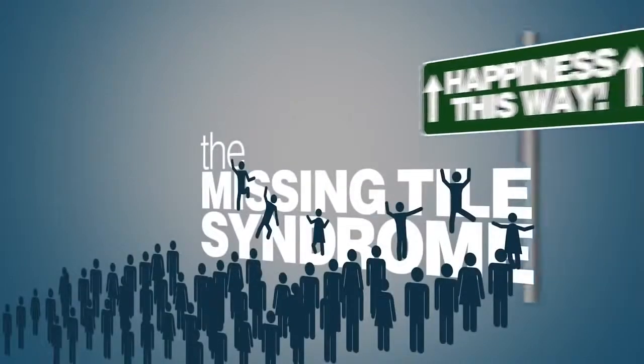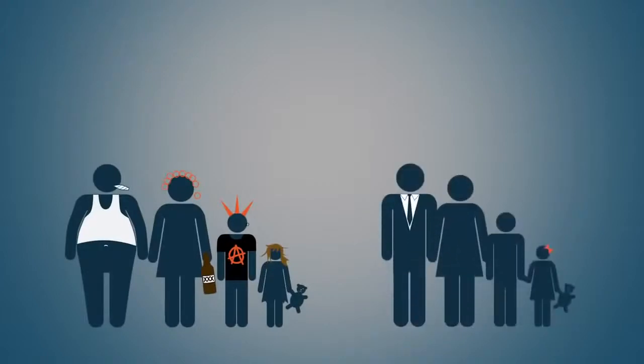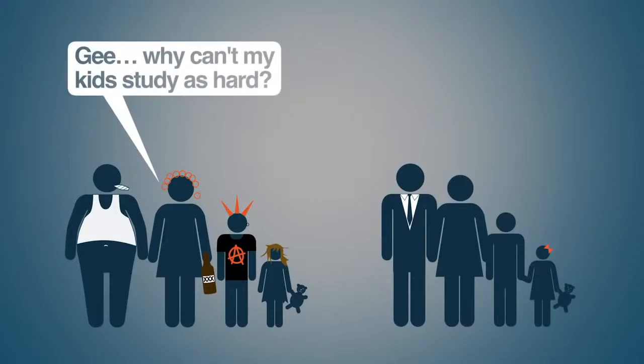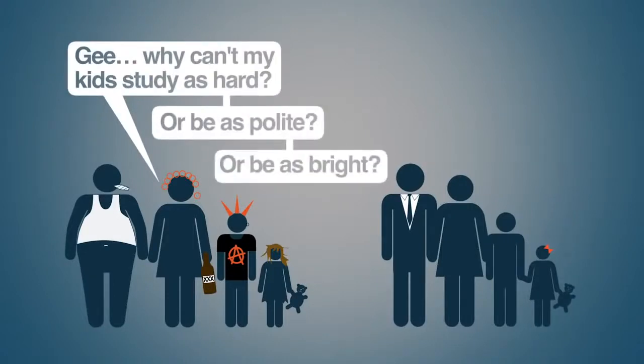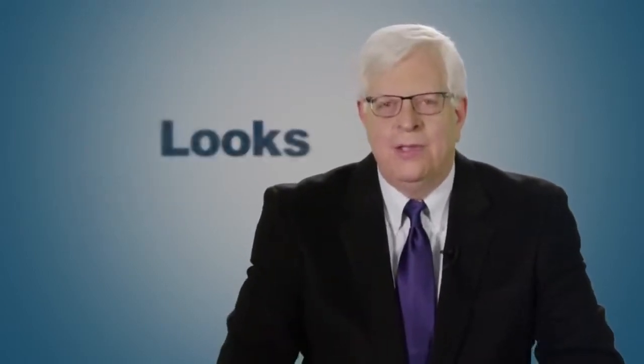That's the way human nature is — we focus on what's missing in our lives. The missing tile syndrome is a very big obstacle to happiness. So big, in fact, that it makes happiness almost impossible. There will always be something missing in your life. When you see other people's kids, you'll think you see tiles that are missing in your own children. "Why can't my kids study as hard? Or be as polite? Or be as bright? Or be as good-looking? Or be as athletic?" The same holds true regarding our spouses, our work, our looks. The list is endless.